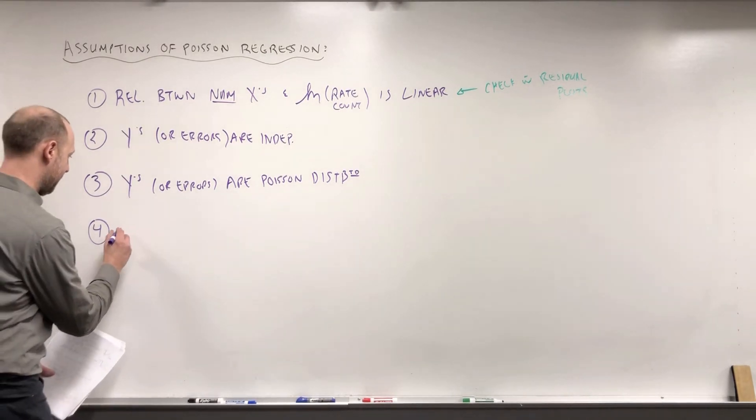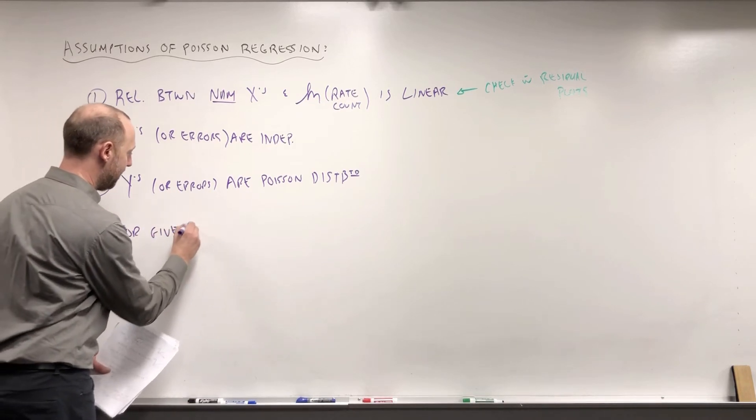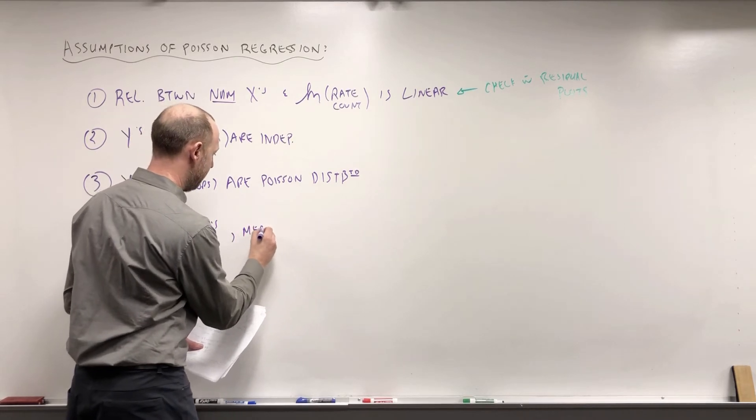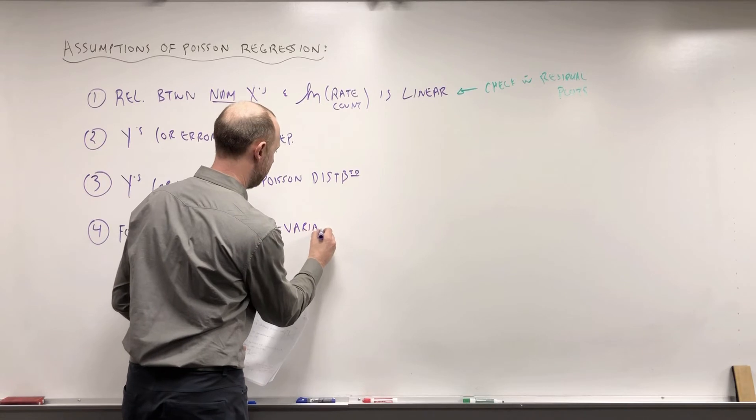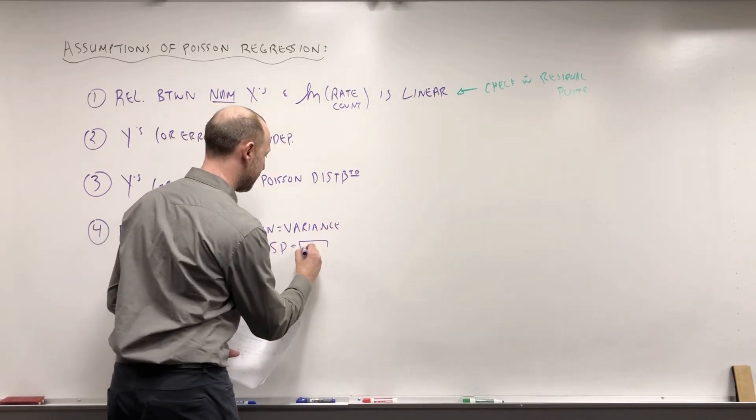So here, for given x values, the mean is equal to the variance, or that the standard deviation is the square root of the mean.